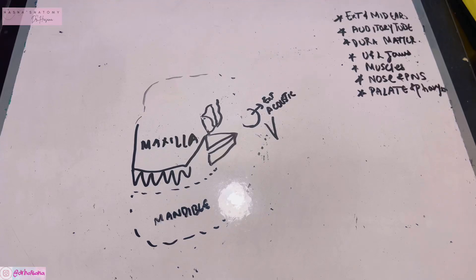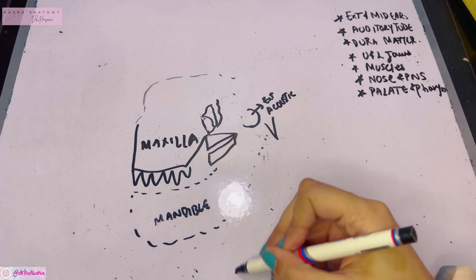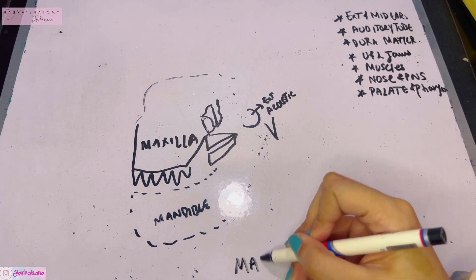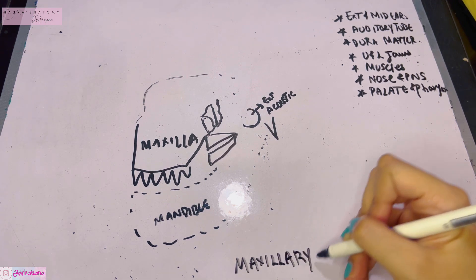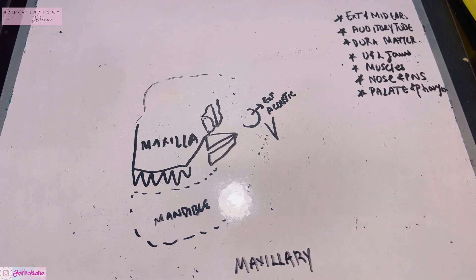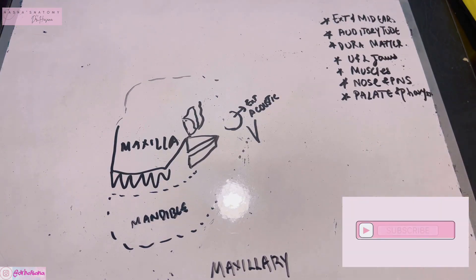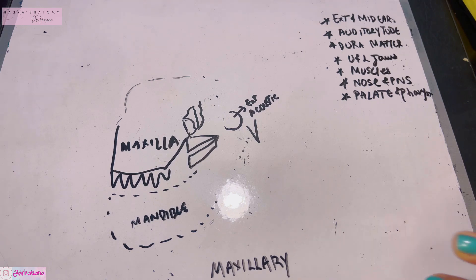Assalamu alaikum, this is Dr. Hasna with Hasna's Anatomy, and today we're discussing the maxillary artery. The maxillary artery is a quite complex artery of the face because it has three parts and it actually supplies a lot of structures. Stay tuned and do not forget to subscribe to my channel.